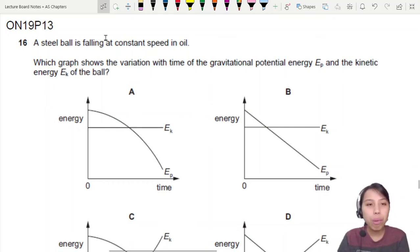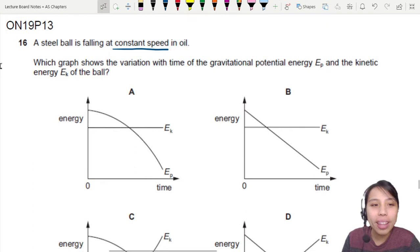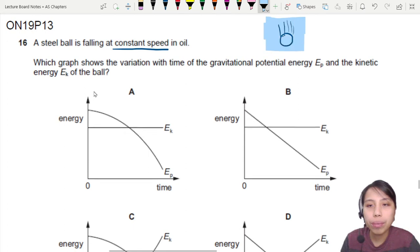Here you have a steel ball falling at constant speed in oil. Interesting, why constant speed? Oh, because of drag force in oil. Which graph shows the variation of two energies, GPE and the KE of this ball, as it is slowly falling down in a liquid of oil?